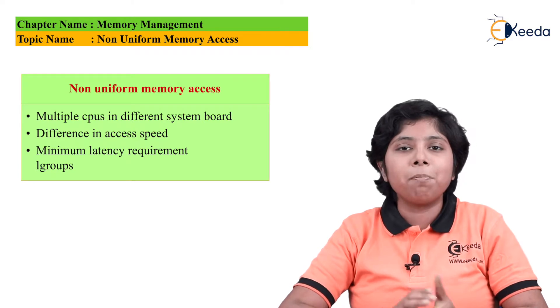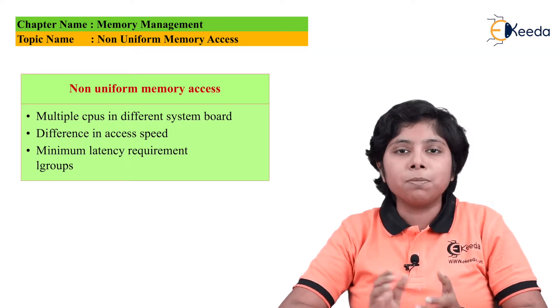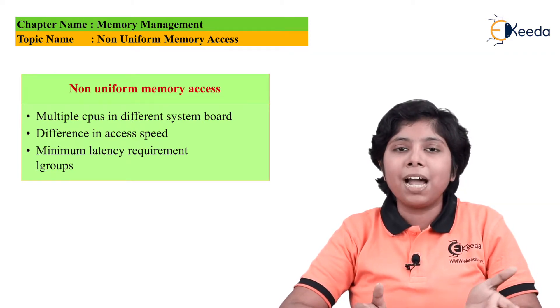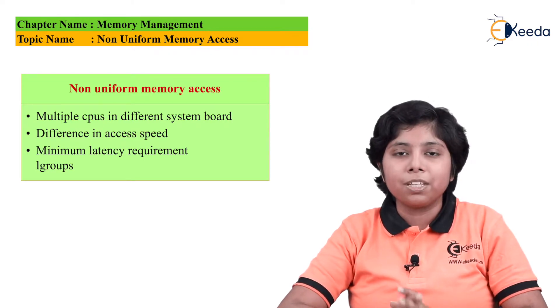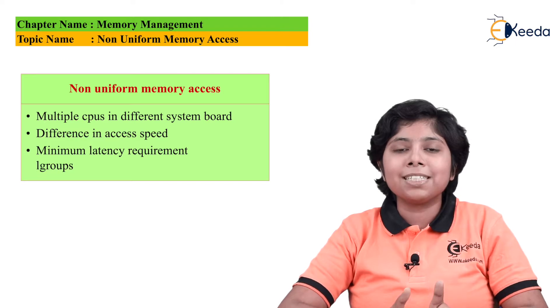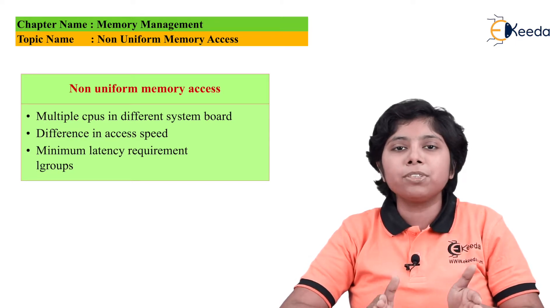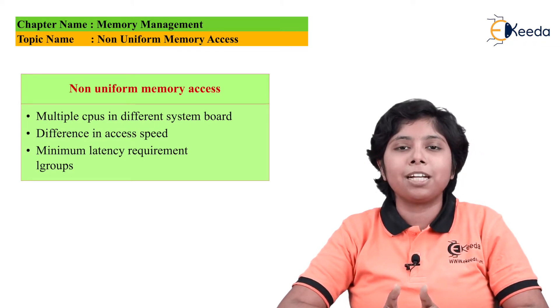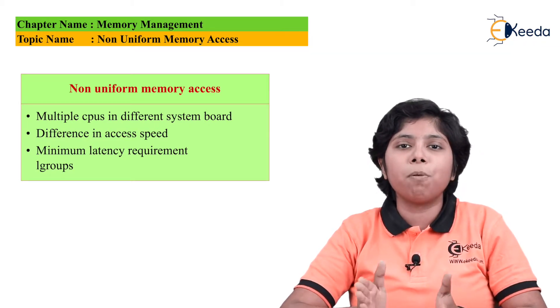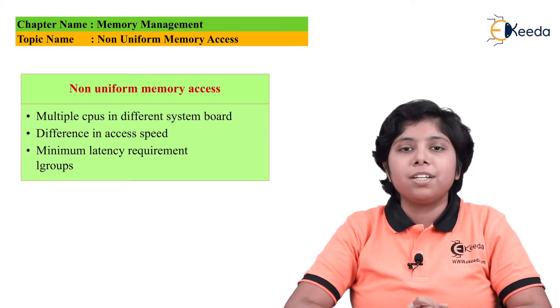Now whenever a memory access is done and the CPUs have different types of memory access time for a single processing unit, then the memory access is called non-uniform memory access or NUMA. Now systems with NUMA are obviously slower than the systems which have all the CPUs and memory placed within the same motherboard.